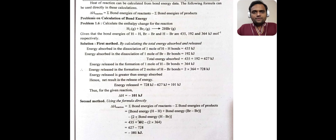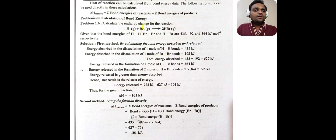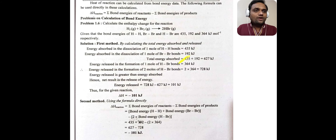This is a simple problem, solvable by two methods. First method: by calculating the total energy absorbed and released. Energy absorbed in the dissociation of one mole of H-H bond is 435 kJ. Energy absorbed in the dissociation of one mole of Br-Br bond is 192 kJ. Total energy absorbed in the dissociation of reactants is 435 plus 192, that is 627 kJ.